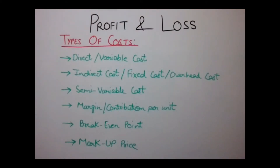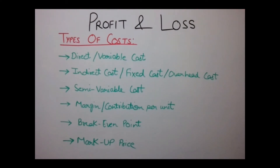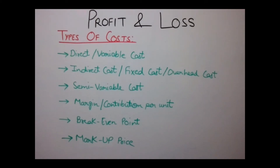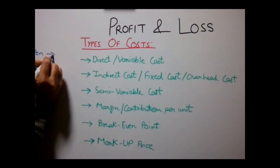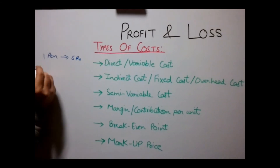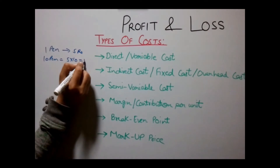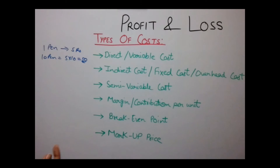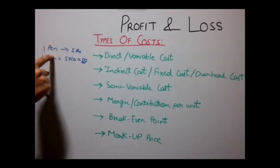Types of costs include Direct Cost or Variable Cost — this is the cost that varies with each unit. For example, if the variable cost of manufacturing one pen is Rs.5, then the cost of 10 pens would be 5 × 10 = Rs.50. An example of this is raw materials used in manufacturing products.